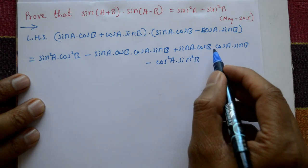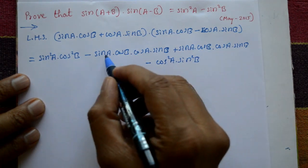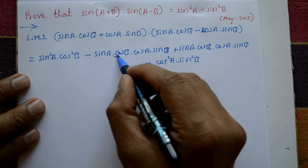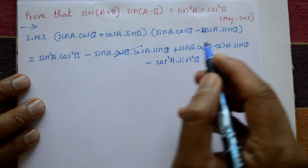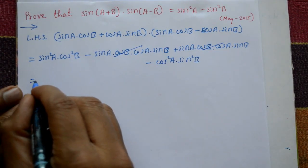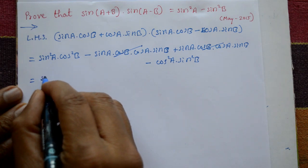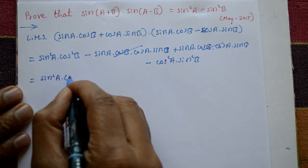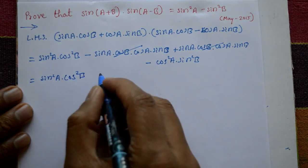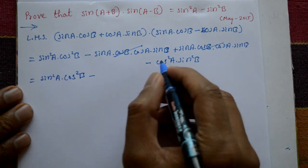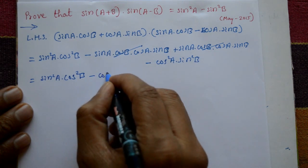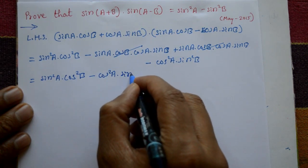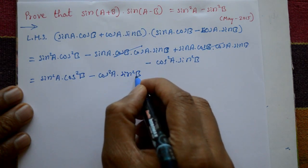The second and third terms — one is negative and one is positive — so they cancel each other. This leaves: sin²a·cos²b minus cos²a·sin²b.